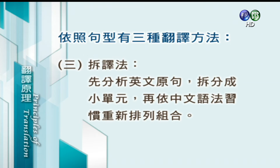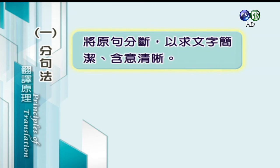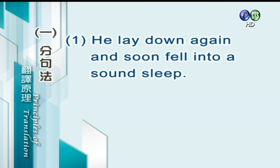基本上，句子依照句型有三种翻译法。第一，分句法：将原句分段，以求文字简洁，含义清晰。第二，合句法：将原句短句部分依合理判断，且符合译文语法，与另一句合并成译句。第三，差译法：先分析英文原句，拆分成小单元，再依中文语法习惯重新排列组合。譬如分句法例子：He lay down again and soon fell into a sound sleep，译成：他又重新躺下，不一会儿就沉睡了。